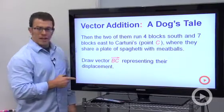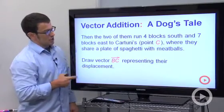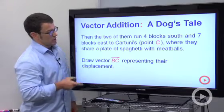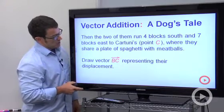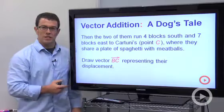Then the two of them run four blocks south and seven blocks east to Cartoonie's, point C, where they share a plate of spaghetti with meatballs. Draw vector BC representing their displacement.